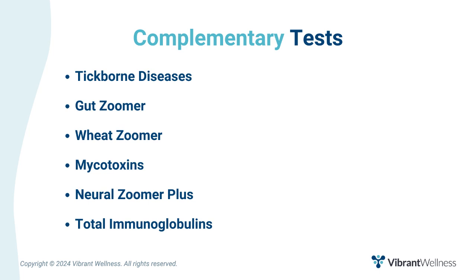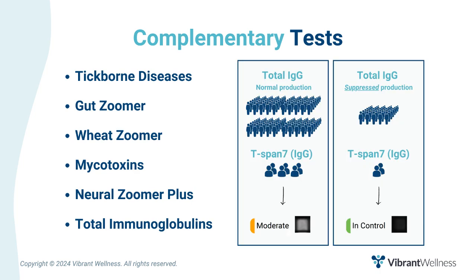The NeuroZoomer Plus measures specific neurological antibodies associated with Lyme disease, such as anti-tubulin, anti-GM1, anti-dopamine receptor 1, and anti-dopamine receptor 2. And finally, total immunoglobulins: serology testing is based on normal, functioning immunoglobulin production. The total immunoglobulins test assesses the number of immunoglobulins, which is helpful in those with suspected immune function compromise or those undergoing IV-IgG therapy.